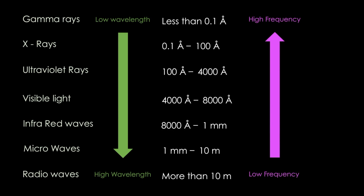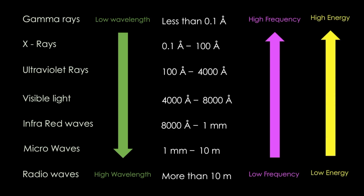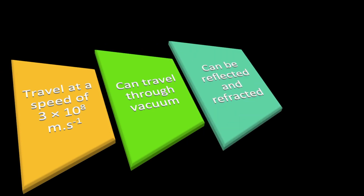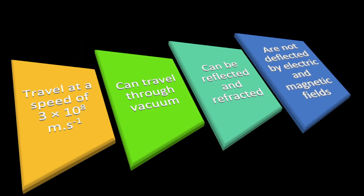Gamma rays have the highest frequency and radio waves have the lowest frequency. Since high frequency waves have high energy, gamma rays also have the highest amount of energy compared to all other electromagnetic waves. All electromagnetic waves — whether gamma rays, X-rays, ultraviolet rays, visible light, infrared waves, microwaves, or radio waves — have properties in common: they all travel at the speed of light, that is 3×10⁸ meters per second; they can all travel through vacuum unlike mechanical waves; they can be reflected and refracted; and they are not deflected by electric or magnetic fields.